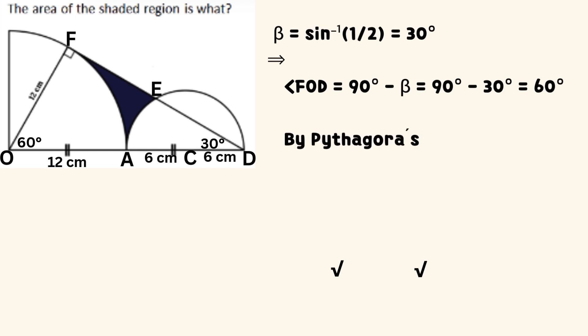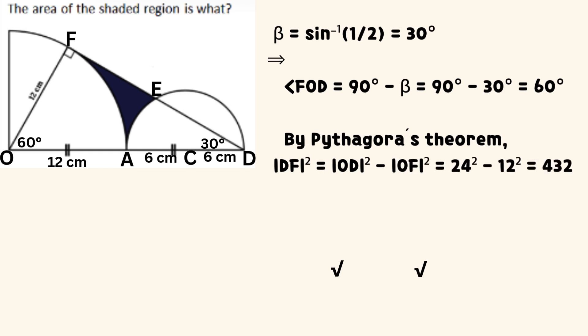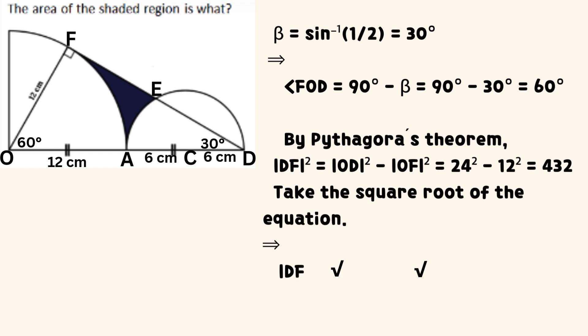It follows that angle FOD equals 90 degrees minus beta, which equals 60 degrees. By the Pythagorean theorem, the square of line DF equals the square of line OD minus the square of line OF, which equals 432 after substitution and simplification. Taking the square root, line DF equals the square root of 432, which equals 12 times the square root of 3. We call this equation 1.